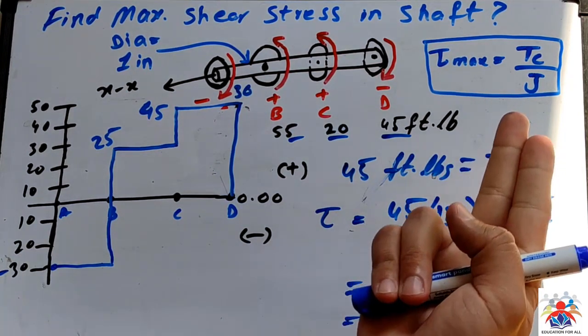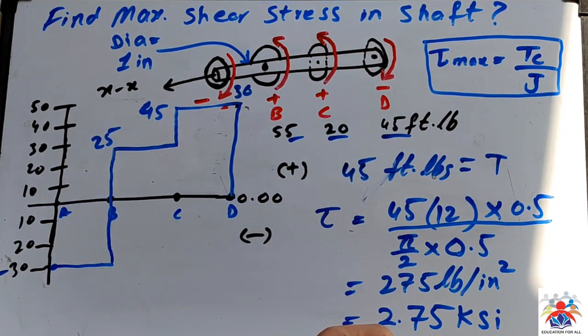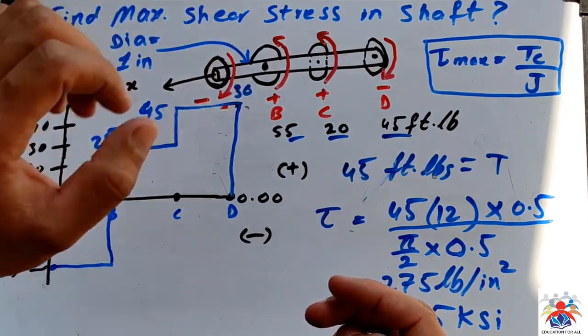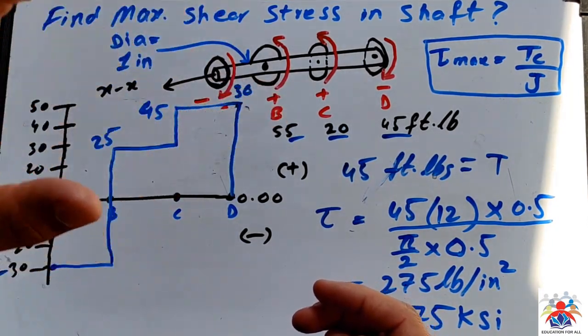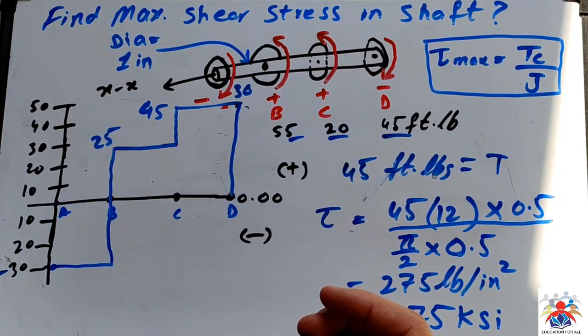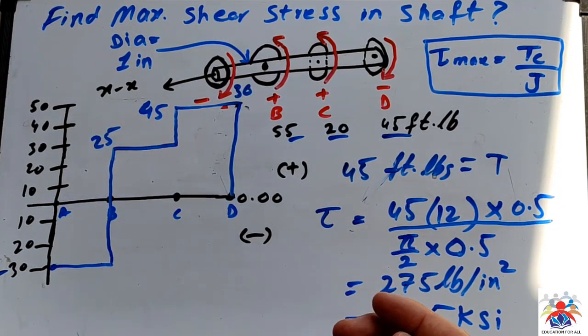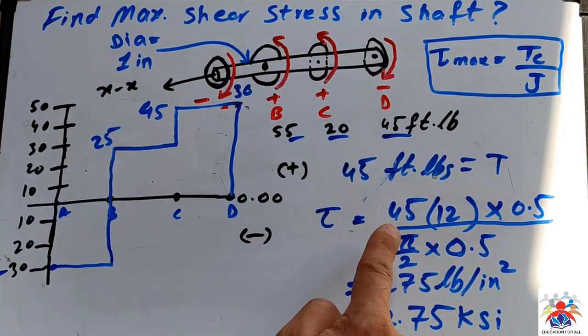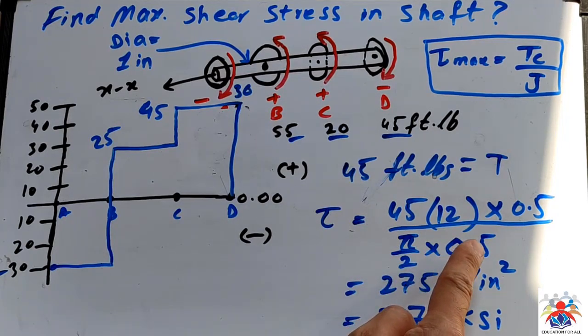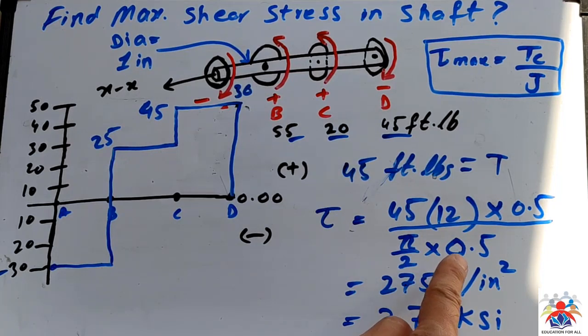And then we have J. J is the polar moment of inertia for this particular section of a particular shaft, of a particular element. Each element has different polar moment of inertia. In our case, we have pi over 2 multiplied by radius. Radius, as I have said, we express with c, which is 0.5.